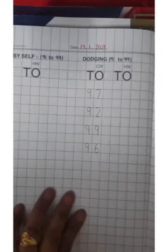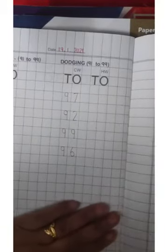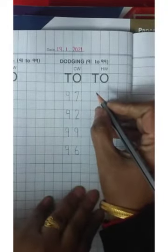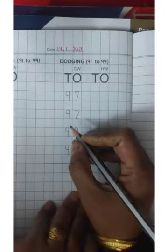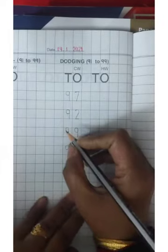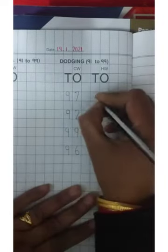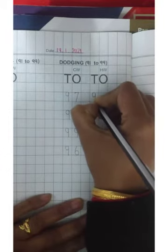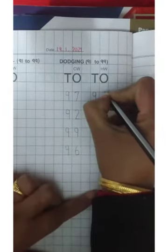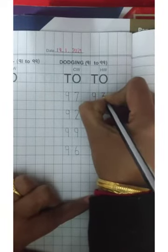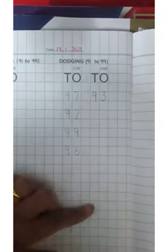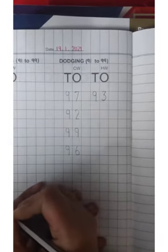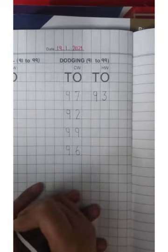Now we will do homework. Ma'am has finished the classwork. Now ma'am will do homework. In homework ma'am is taking first number 93. 93. 93. 90 sound is coming.